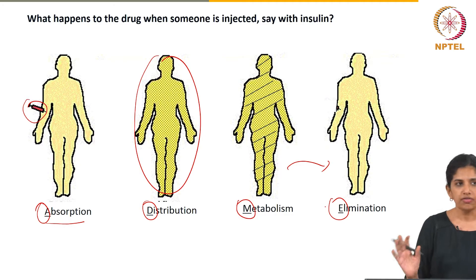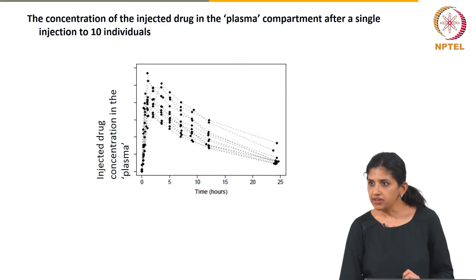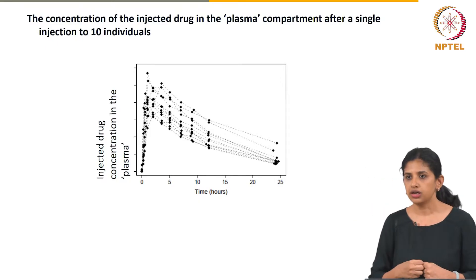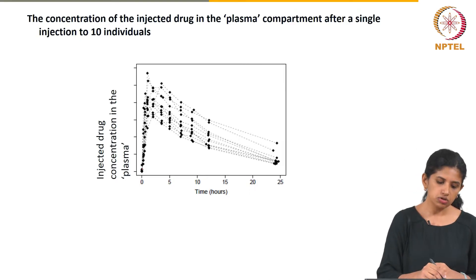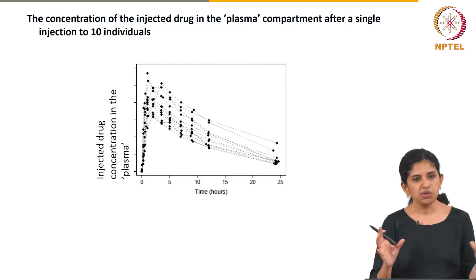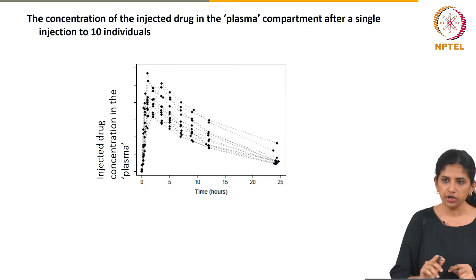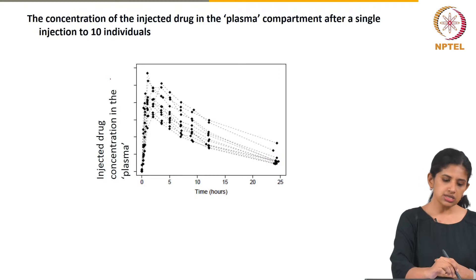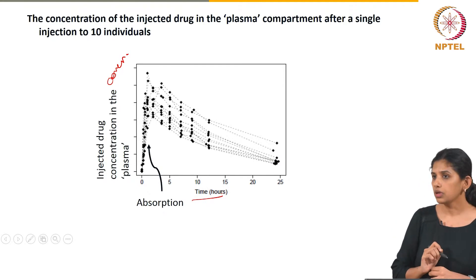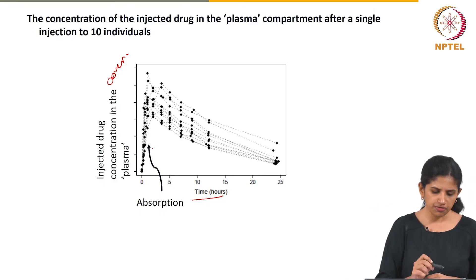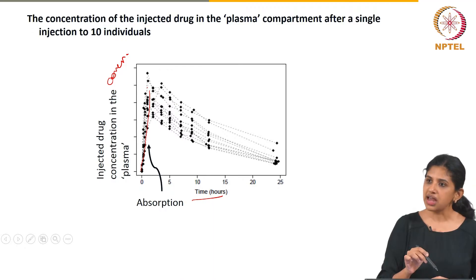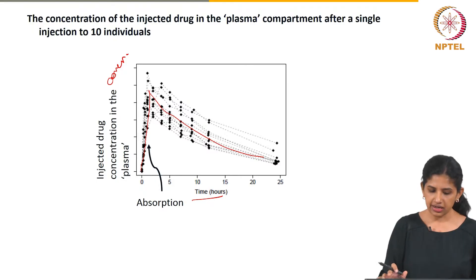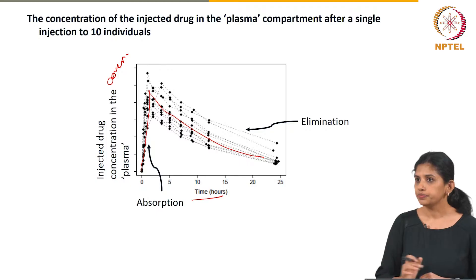ADME is a key cornerstone of pharmacokinetics — what happens when a drug is given to a person. Now we can get quantitative: if I inject 10 people with insulin and measure what happens to the insulin in the plasma — concentration over time — at time zero when the injection is given, you see some increase in insulin as it gets absorbed, and then a decrease as it gets metabolized and eliminated.